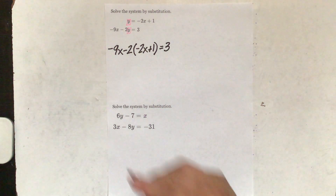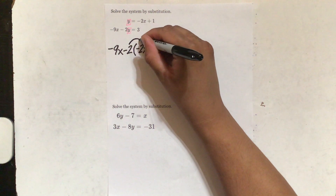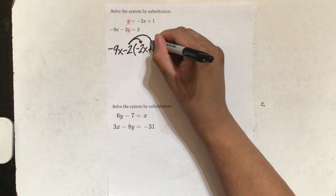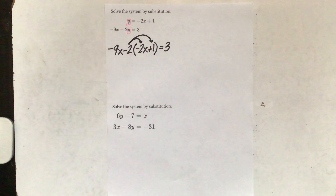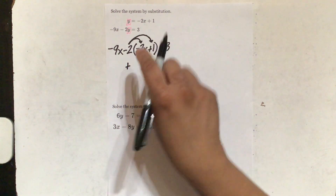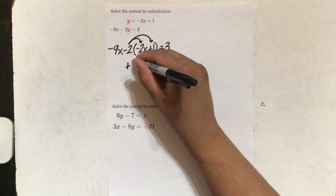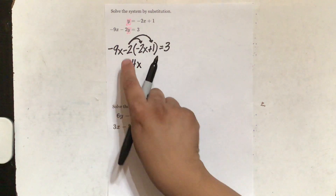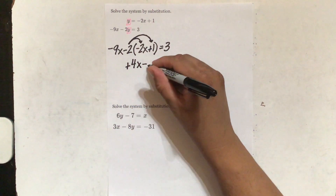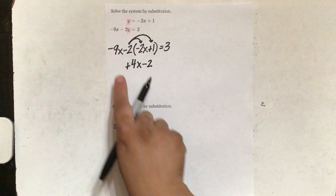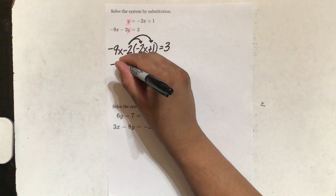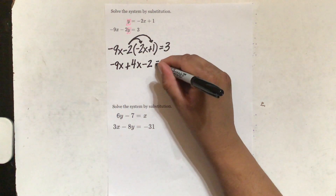So now I'm going to distribute this negative 2 here. This negative 2 is going to go to negative 2x, and this negative 2 is going to go to positive 1, and they're going to multiply. Negative times negative is positive: 2 times 2 is 4x. Negative times positive is negative: 2 times 1 is 2. Now everything else — this negative 9x and equals 3 — nothing happened to it, so I'm just going to bring them down, like this, equals 3.